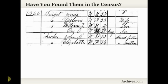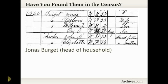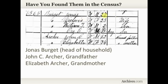A very good thing to think about — and this is a relatively easy record set to use — is the census. Have you found all of the siblings in all of the censuses that they should appear in? Here in the household of Jonas Burgett, he's the head of household. Also living in this household are two very important people: John C. Archer, who is listed as his grandfather, and Elizabeth Archer, who is listed as his grandmother.